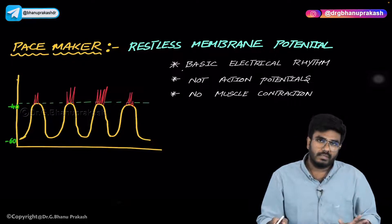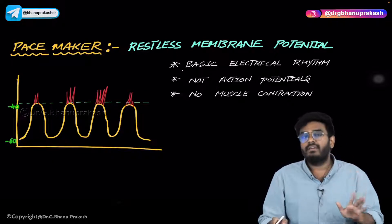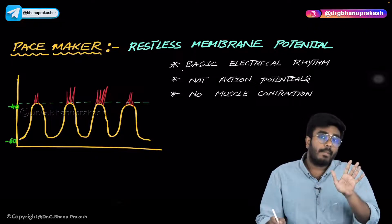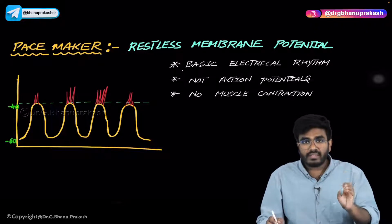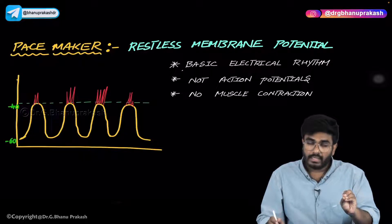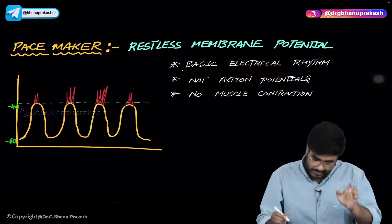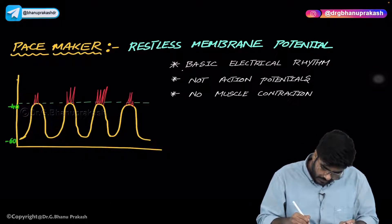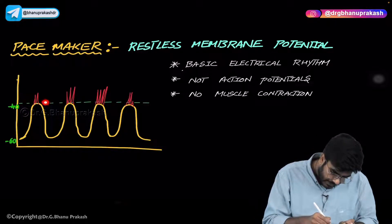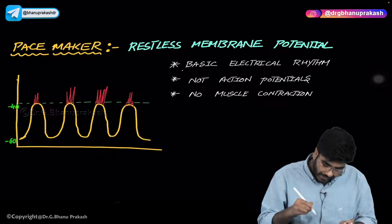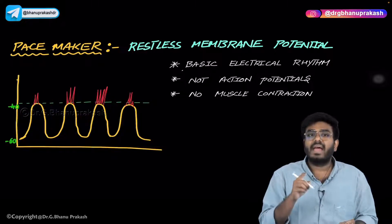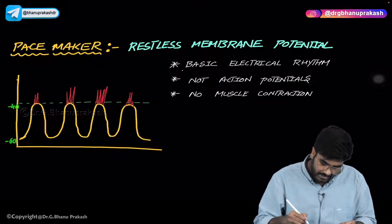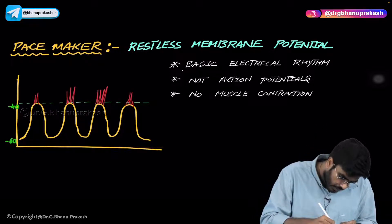Whenever there is parasympathetic activity or a rise in acetylcholine, then only these spikes will develop. These spikes are the actual action potentials, so they are called spike potentials.